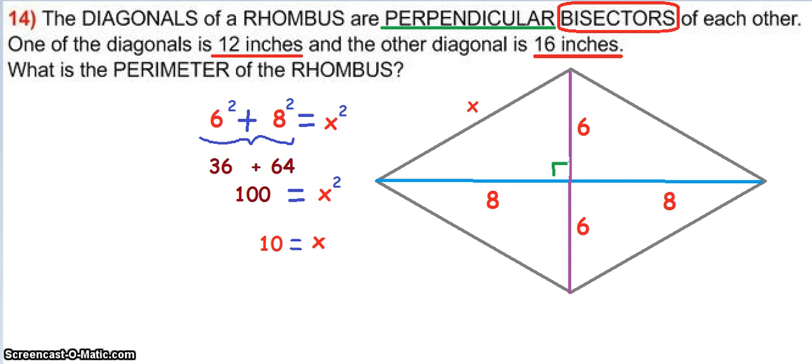In problem number 14 we're told the diagonals of a rhombus, now a rhombus is a four-sided figure with each side equal, are perpendicular bisectors of each other.